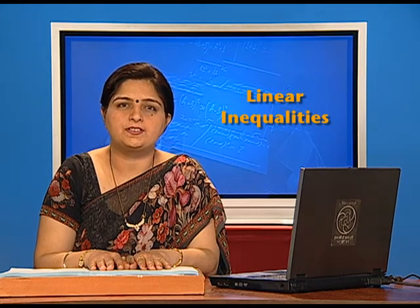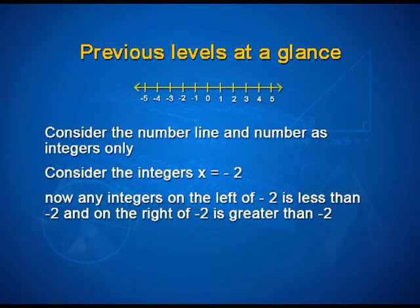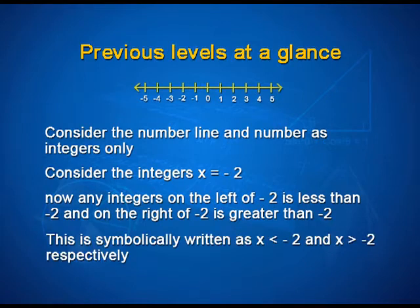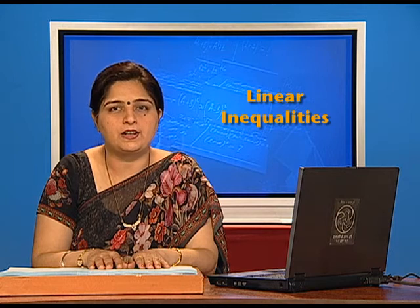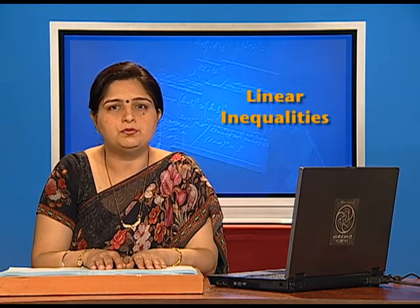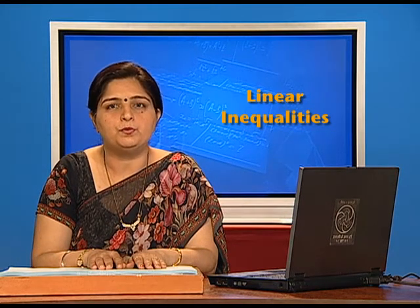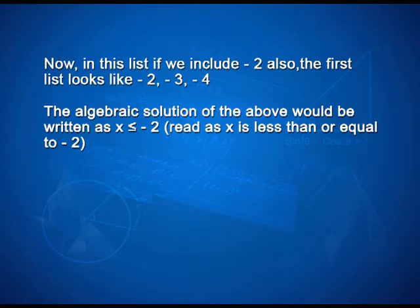Let us have a glance at the previous levels. Consider a number line with integers marked on it. Consider the integer x = -2. Any integer on the left of -2 is less than -2, and an integer on the right of -2 is greater than -2. This is symbolically written as x < -2 and x > -2 respectively. For x < -2, the possible integral solutions are x = -3, -4, -5, and so on. If we include -2 also, the list becomes -2, -3, -4, and so on, written algebraically as x ≤ -2.